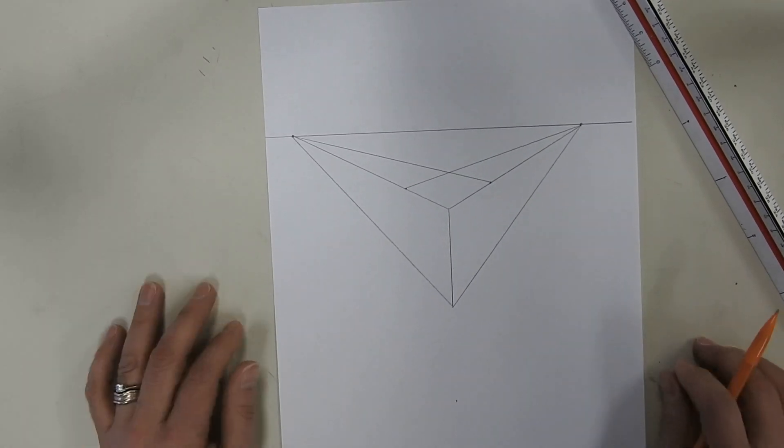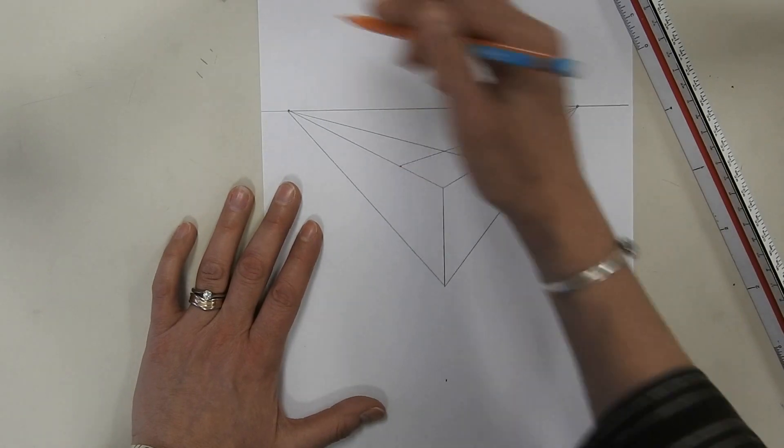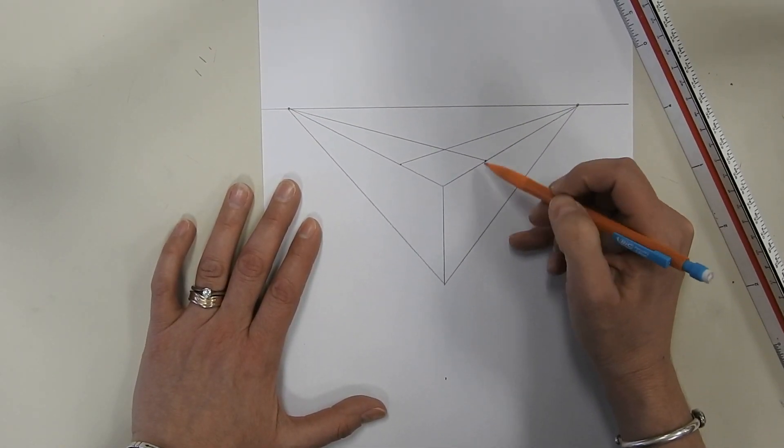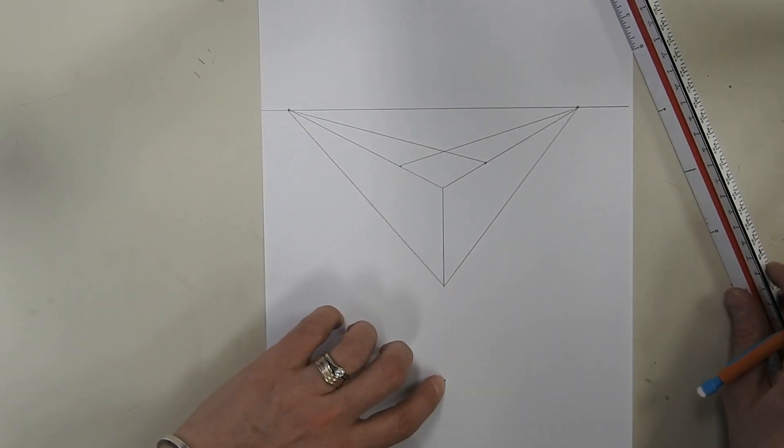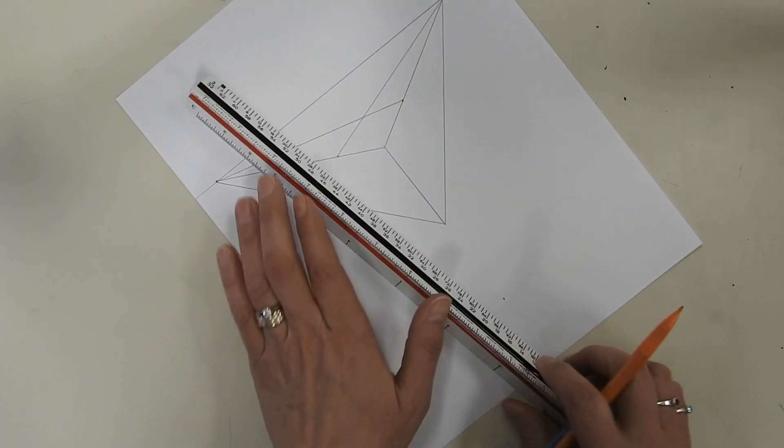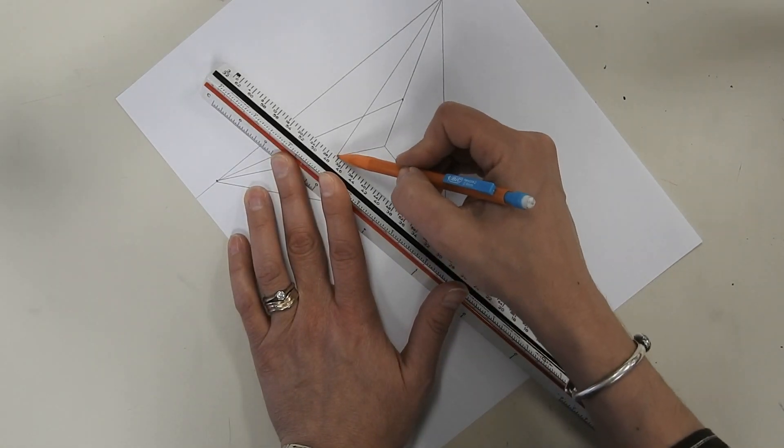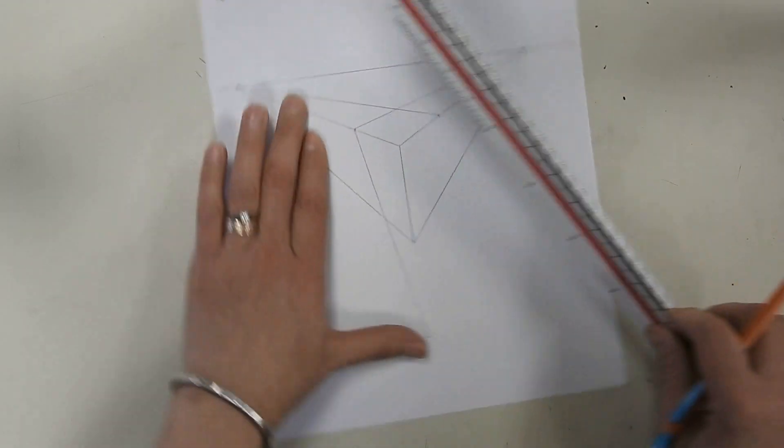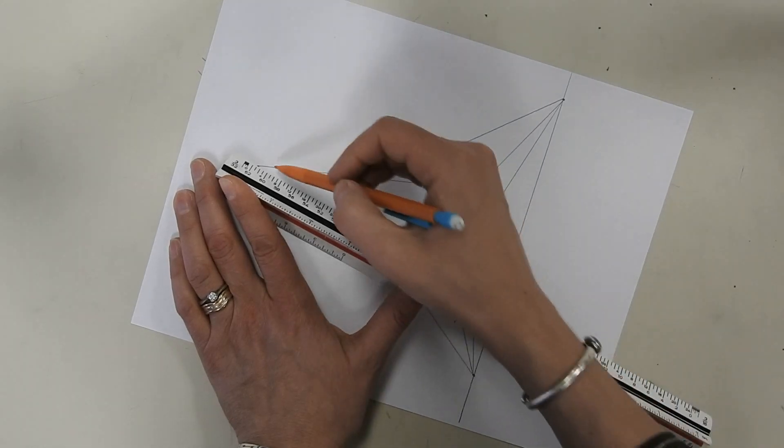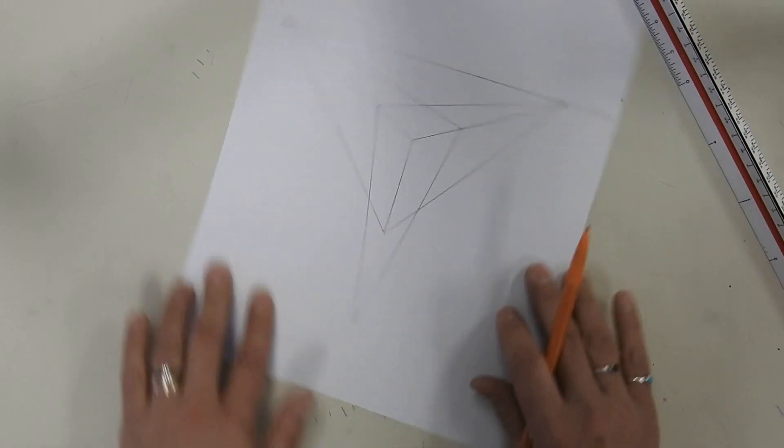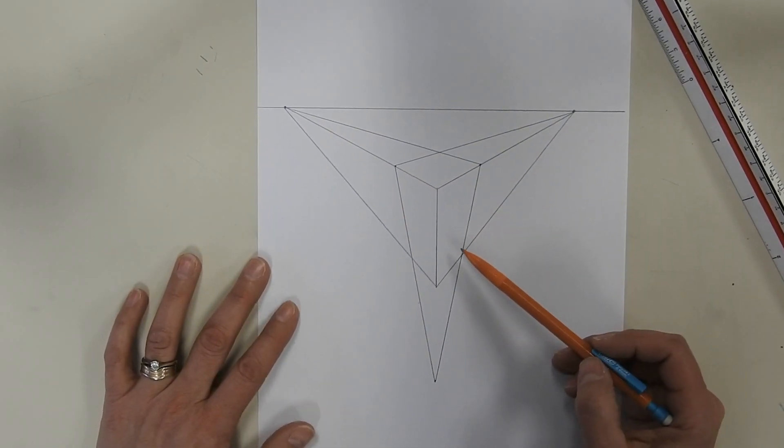Now is where the difference comes in. So this dot right here, in two-point, we would normally use our triangle, and we'd have a straight up and down line right here that would be parallel to this one. In three-point, we're going to take that and bring it down to this vanishing point. So we don't need the triangle for this one, we need our ruler. It's going to go all the way down there, and this one, like that. So now you can see you have your shape in three-point perspective.